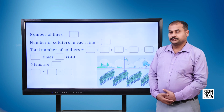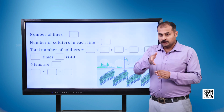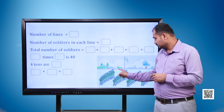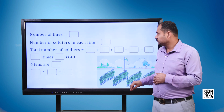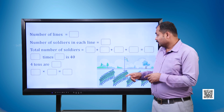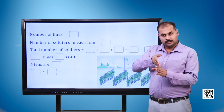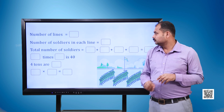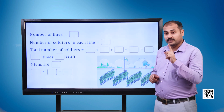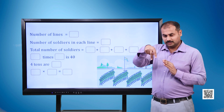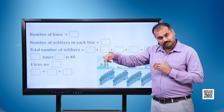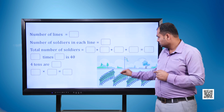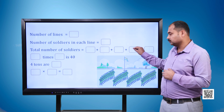Moving ahead, we have an image where soldiers are standing in lines. Number of lines is equal to blank. Number of soldiers in each line equals blank. Total number of soldiers is equal to blank plus blank plus blank plus blank, which equals blank. Blank times blank is 40. Four tens are blank. Blank into blank is equal to blank.